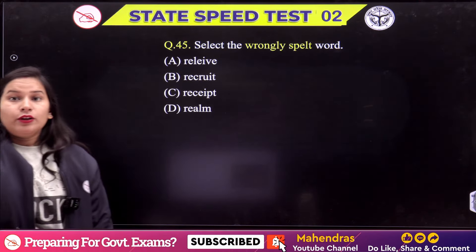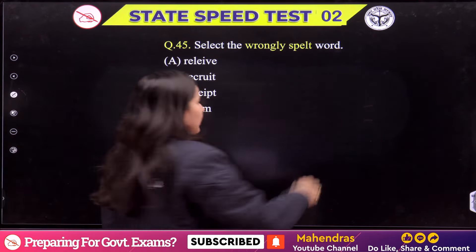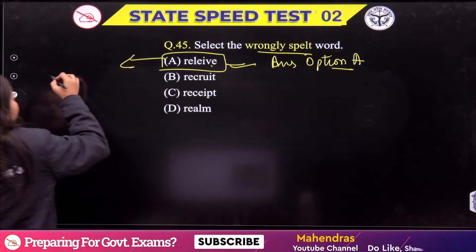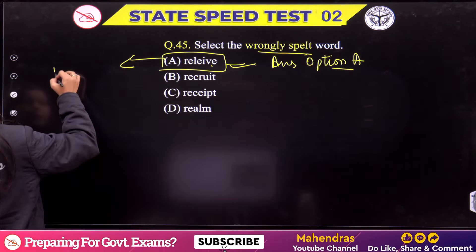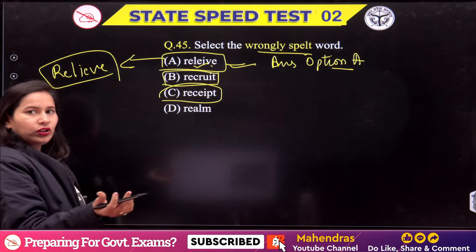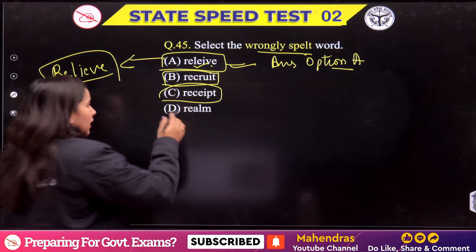Question 45: Which word is wrongly spelled? The answer is 'Relieve'. In the spelling, it is R-E-L-I-E-V-E. The rule is: 'i before e except after c.' When you use C, it becomes 'received' — C-E. If there is something after C, it changes. For example: 'receipt' is R-E-C-E-I-P-T. But 'relieve' follows I-E. So the correct answer is Option A.